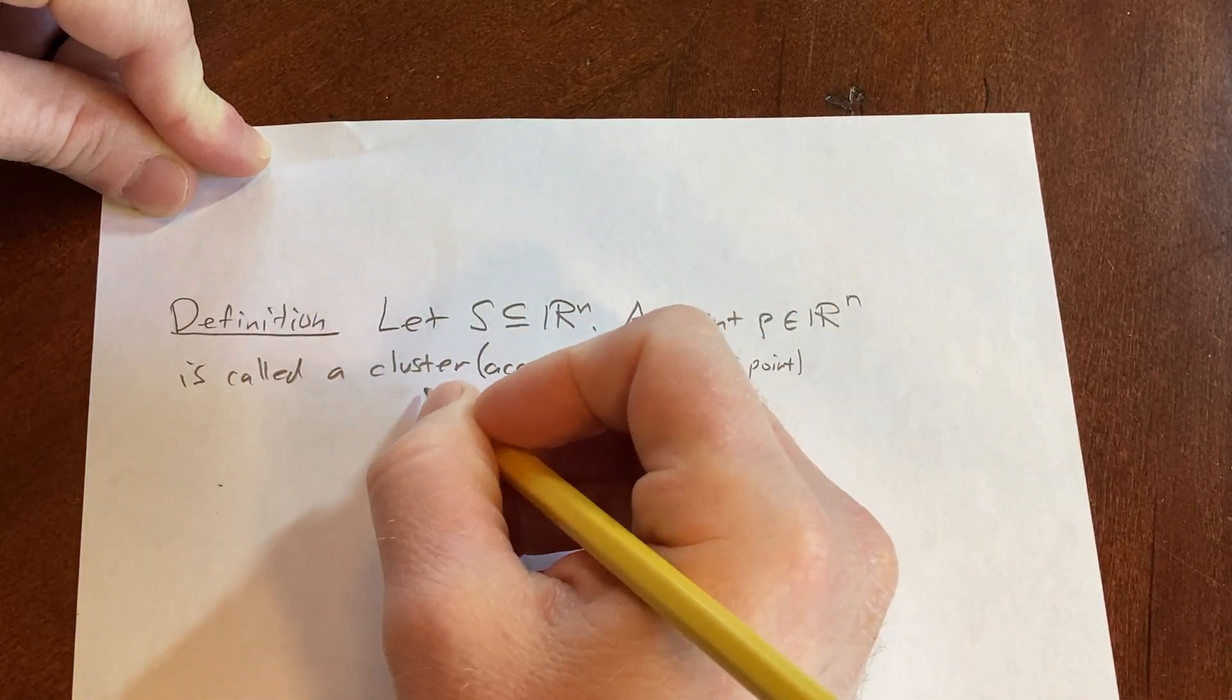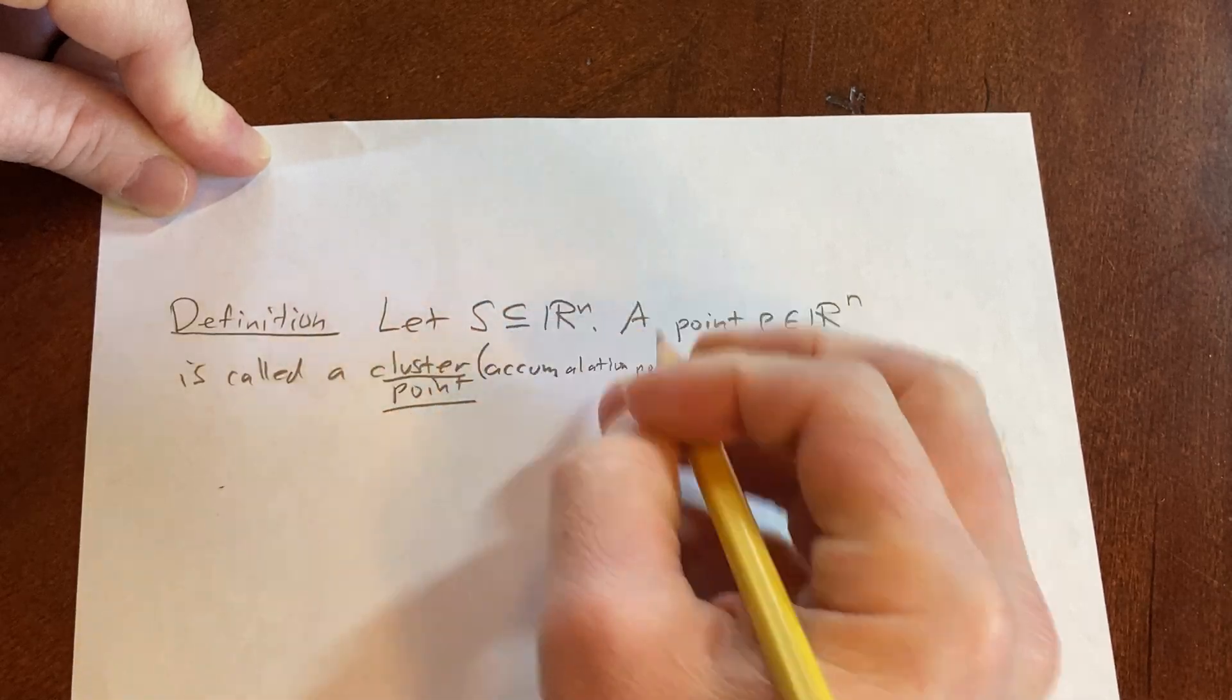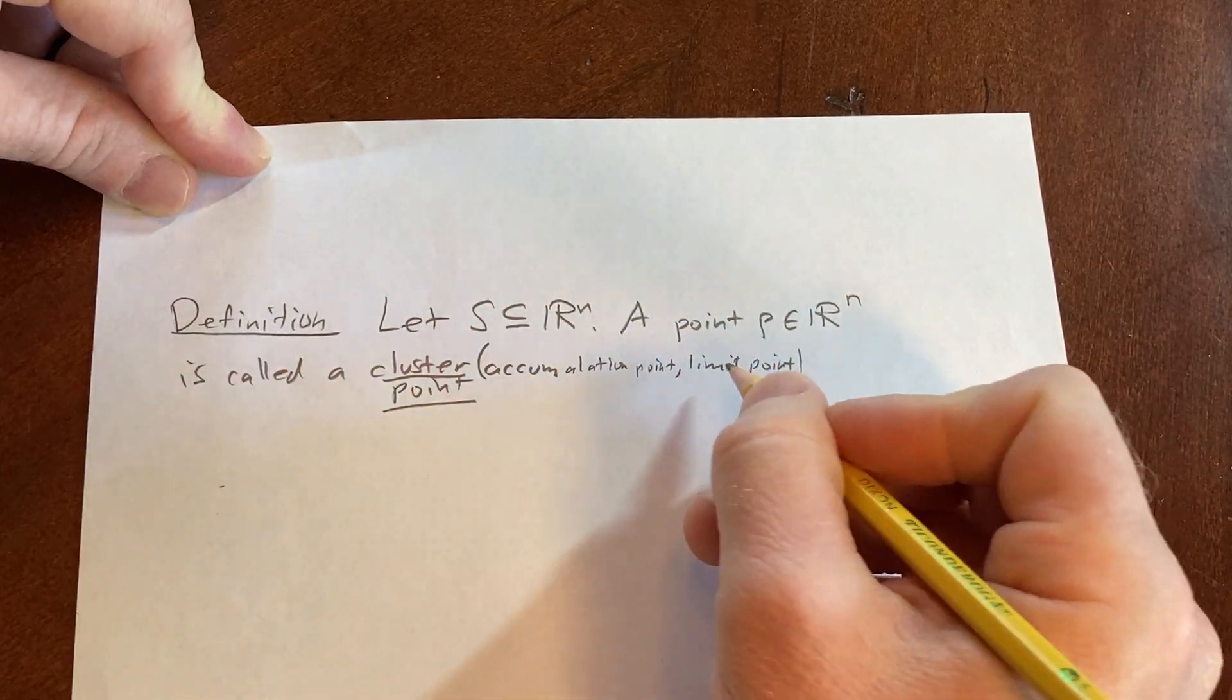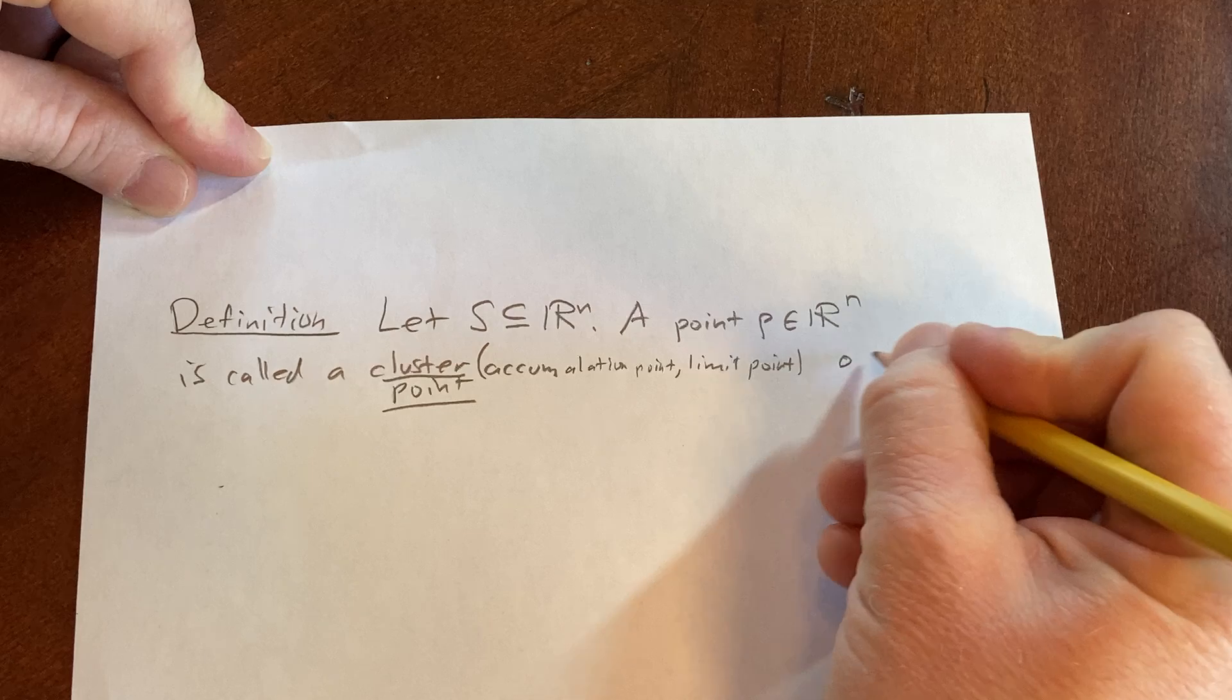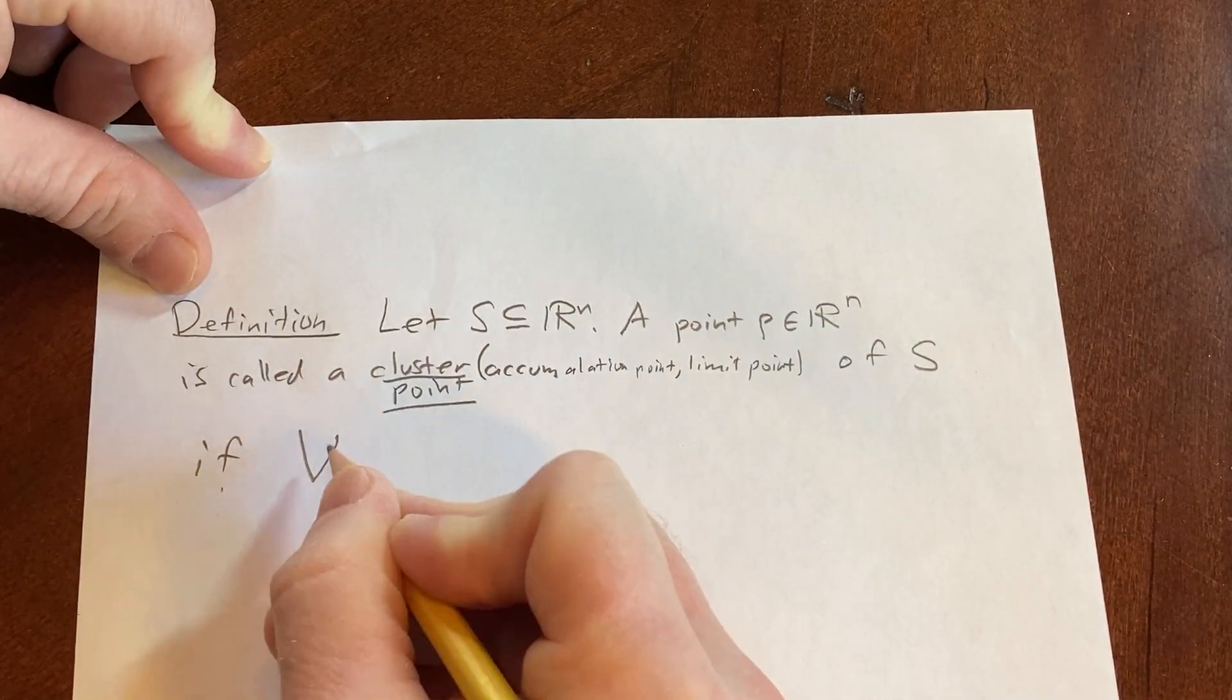It's called a cluster point, or these other names—accumulation point, limit point—all of these are good. It's a cluster point of S if for all r greater than zero,